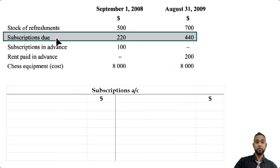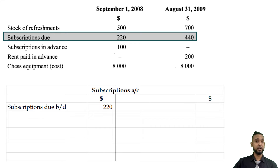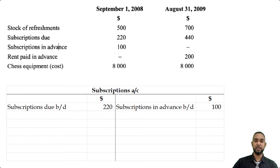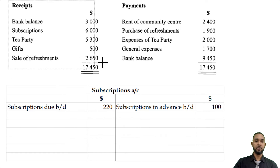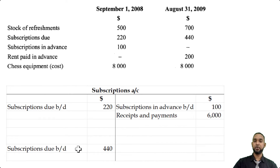We have subscriptions due or accrued — that's accrued revenue, a current asset with a debit balance — so we put the opening balance of $220 on the debit side. We also have subs in advance, which is prepaid revenue — a liability with a credit balance at start, so that goes on the credit side. From the receipts and payments account on the debit side we see subscriptions of $6,000 received, so that goes on the credit side of the subscriptions account. The closing accrued balance is carried down on the credit side and brought down on the debit side.